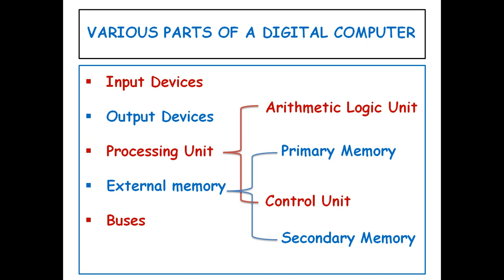Coming to the various parts of a digital computer system — in order for a digital computer to solve problems it should be equipped with the following components: input devices, output devices, a processing unit, external memory, and buses. If you use a desktop computer, you might already know that there is no single part called 'the computer.' A computer is really a system of many parts working together. The physical parts which you can see and touch are collectively called hardware, while software refers to the instructions or programs that tell hardware what to do.